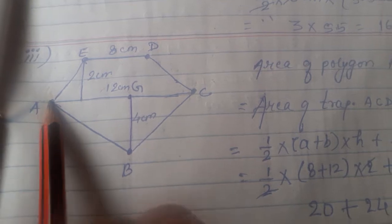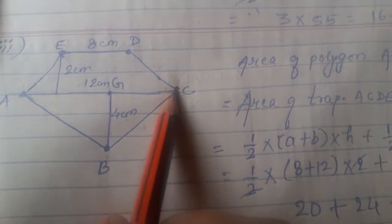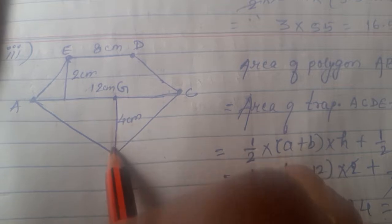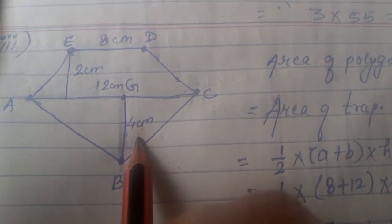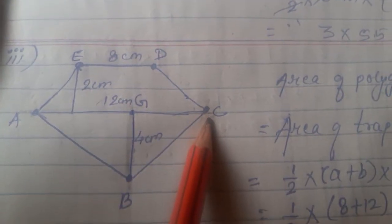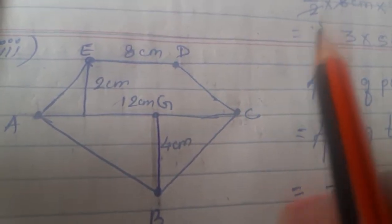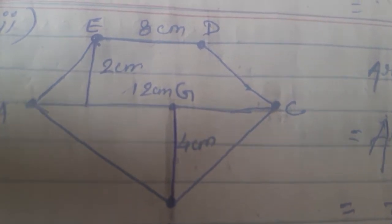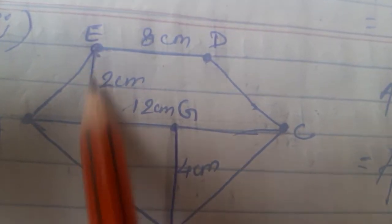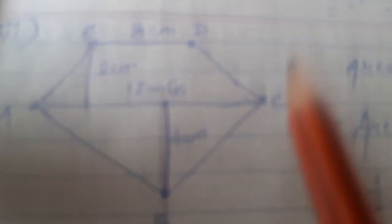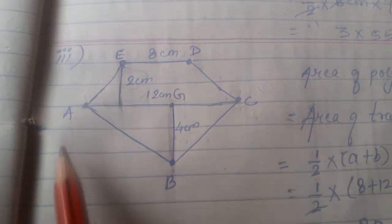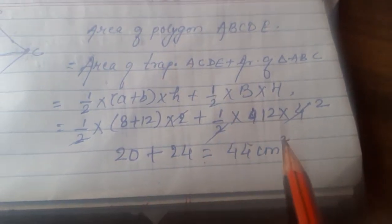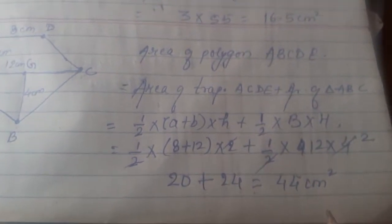For the triangle, the base is AC and the height is BG. The base is 12 cm and the height is 4 cm. The formula for trapezium is half into (A plus B) into H, where A plus B is the sum of the parallel sides and H is the distance between them. The parallel sides are 8 cm and 12 cm, and the height between them is 2 cm.